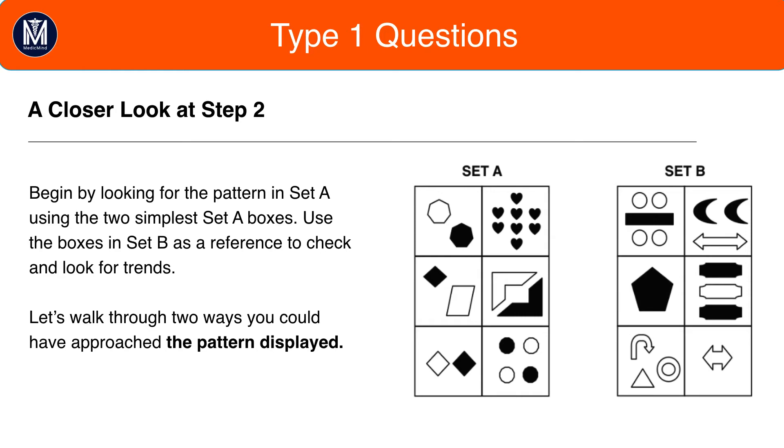For example, if the pattern was that Set A had straight-edged shapes and Set B had curved shapes, it's quite difficult to work out the pattern by just looking at Set A or just looking at Set B. Instead, you might want to do a comparison.